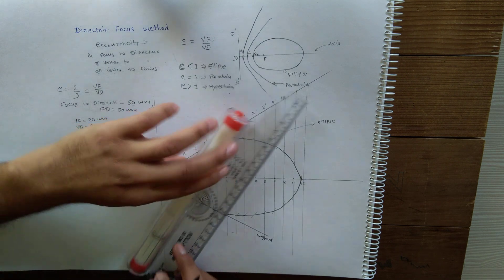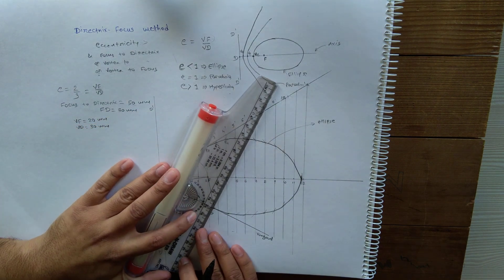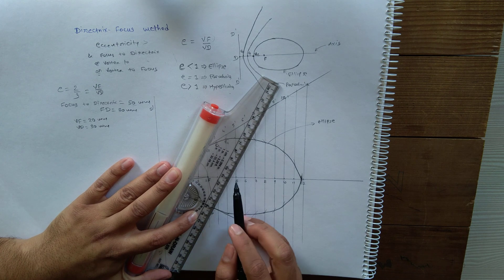And perpendicular to this tangent will be the normal at the same point.